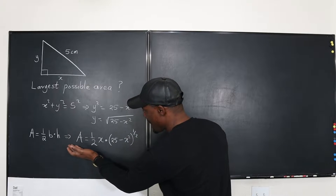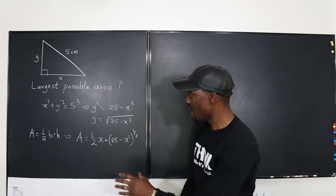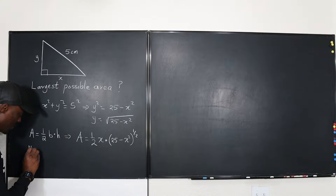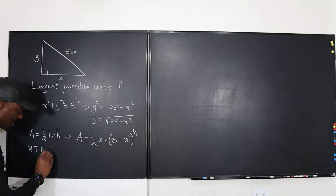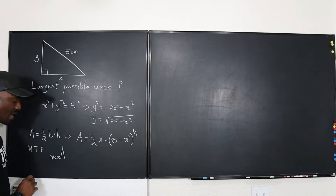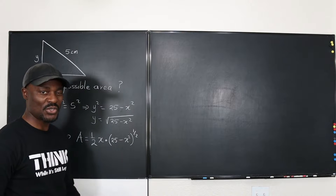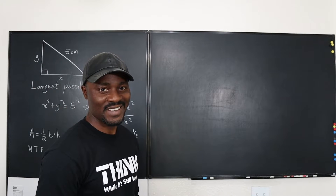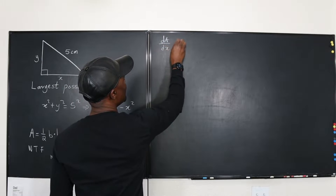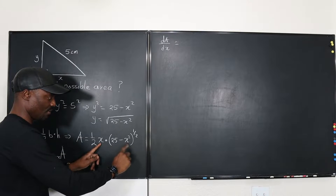Now we want to find the maximum area — what will x be for this to be maximum? Our plan is to find maximum A: we take the derivative, equate it to zero, find the critical number, and that's it. So what will dA/dx be? If we differentiate A with respect to x, we'll have to use the product rule because this is a product of two functions of x.